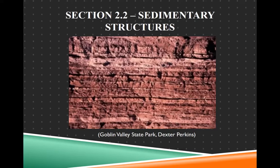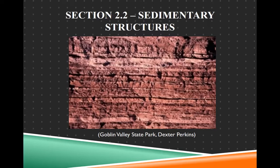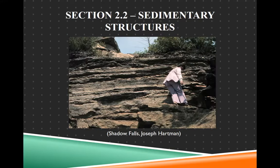We'll start with sedimentary structures. This is an example from Goblin Valley State Park, a photo taken by one of our professors here at UND, showing some sedimentary structures. You may think it's just lines in the rock, but that is a structure — it's a definable shape. It's different rock layers laying flat on top of each other. This is another example of sedimentary structures, with even finer beds; it's more shale-y sand.